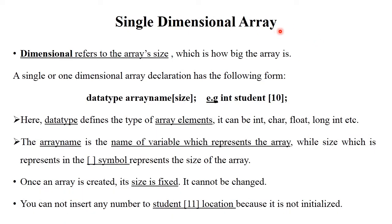What is meant by single dimensional array? The word 'dimensional' refers to the array size — how big the array is. A single dimensional array is declared as follows: data type, array name, and size. This is the syntax of single dimensional array. Data type means the type of element — for example, integer. Array name may be, for example, 'student'. Size means, for example, 10, meaning there are a total of 10 elements stored. Size is always represented by square brackets.